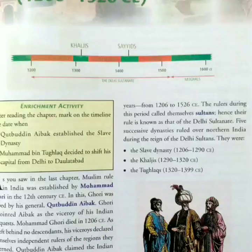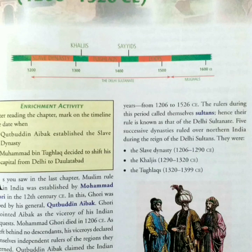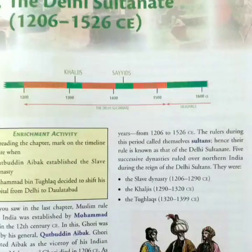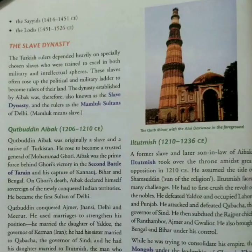The period of Delhi Sultanate lasted for more than 300 years, from 1206 to 1526 CE. This rule is known as Delhi Sultanate because the rulers during this period called themselves Sultans. There were five dynasties that ruled over northern India during the reign of Delhi Sultans — they were successive dynasties, i.e. they ruled one after the other. They were the Slave dynasty, the Khiljis, the Tughlaqs, the Sayyids and the Lodhis.